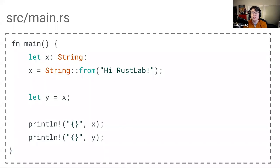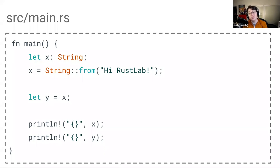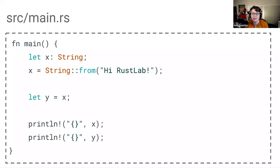In order to do that, let's use a different piece of code. Now, if you are an experienced Rust programmer and you're looking at this code thinking 'this is going to error out,' well, you are right. But we'll see how and why that happens in just a moment. First, let's go through this code line by line. We declare the variable x and give it the type of string.